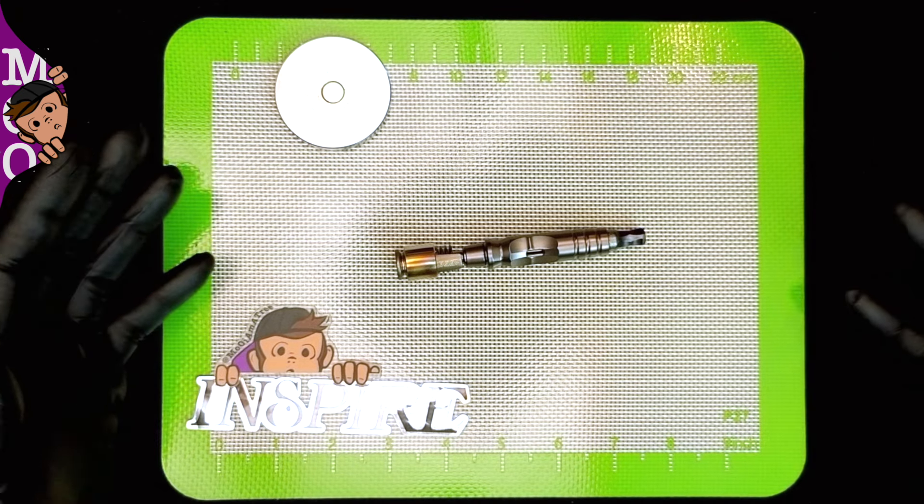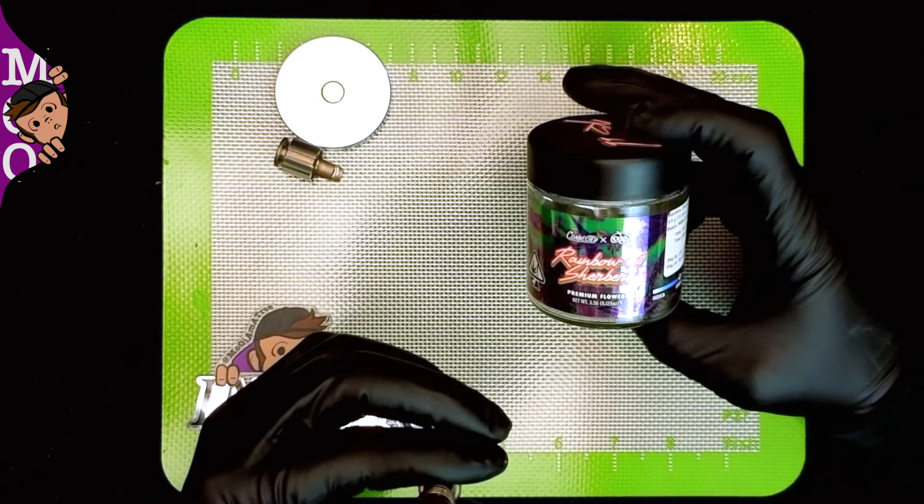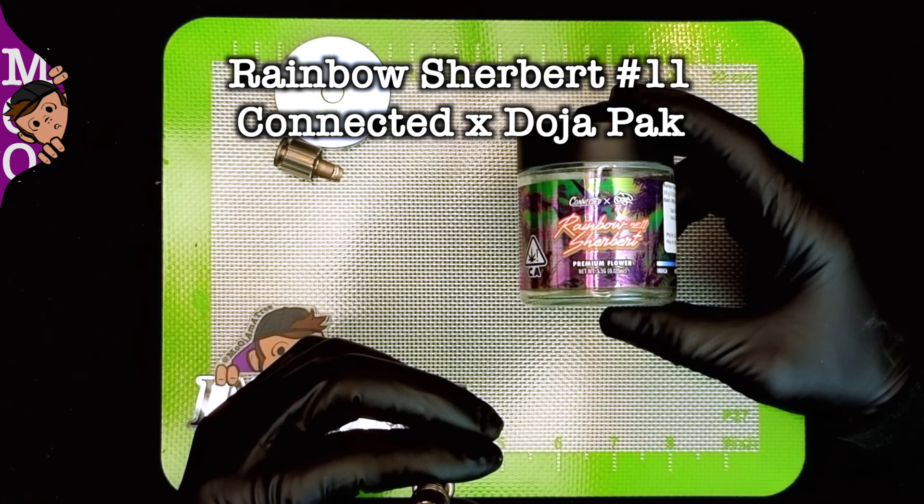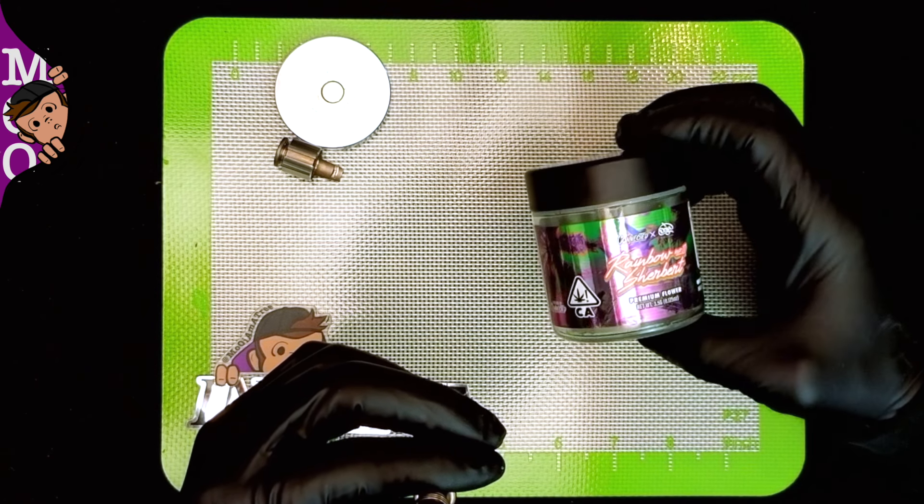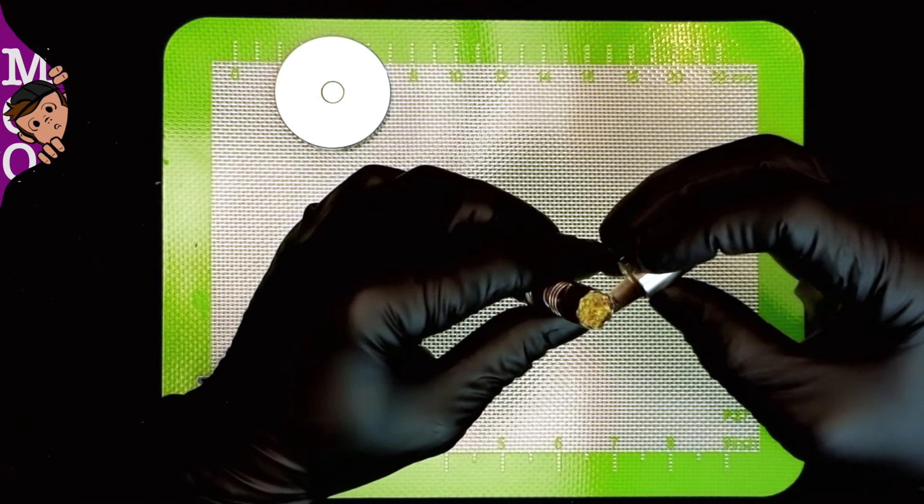Enough talk, let's go ahead and put it to use, get some flower in here and light it up. Today we're trying out some Rainbow Sherbert number 11 from Connected and Doja Pack, a really good brand to come out of California and super tasty, really excited to try this out in the Hyperdyne.